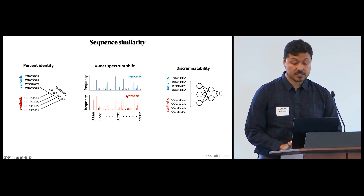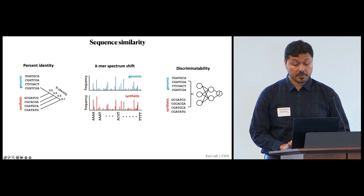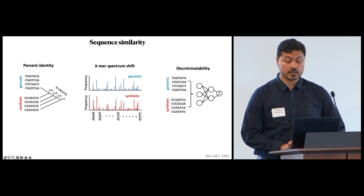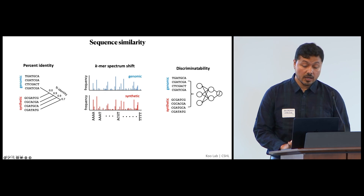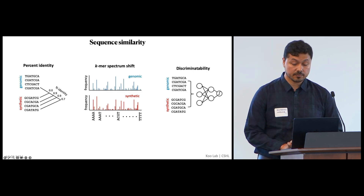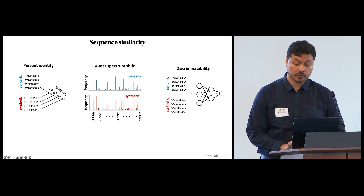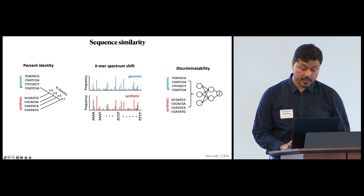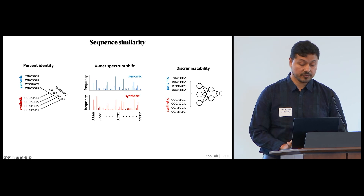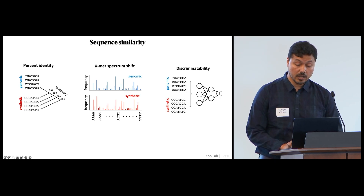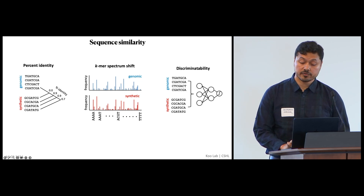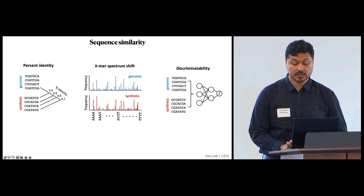For sequence similarity, we use the percent identity, which measures the extent of memorization as well as the diversity of the synthetic sequences. But since percent identity alone isn't useful for regulatory sequences, we also consider the k-mer spectrum shift, which is the Jensen-Shannon distance between the k-mer distributions. Discriminatability assesses how well a supervised model can distinguish between synthetic and genomic sequences — this method is analogous to a GAN discriminator, but applied in a post-hoc manner. Ideally, we would like to see low percent identity and low k-mer spectrum shift, which indicates similar k-mers within the regulatory DNA but not through explicit memorization. We also want the discriminatability to have an AUROC of 0.5, which means that the synthetic DNA sequences are similar to the genomic sequences.